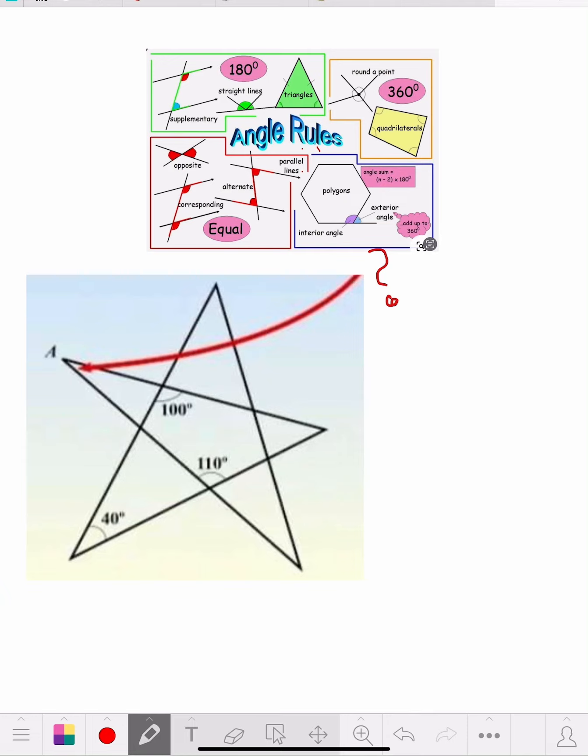A couple of ones we're going to use here: we're going to use the fact that a triangle is 180 degrees, and then we're also going to use a straight line is 180 degrees. Those will be the biggest ones we use.